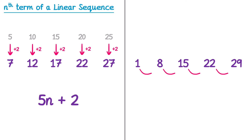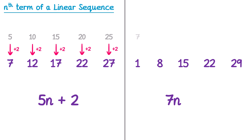For the next question, to get from one term to the next, we're always adding 7, so this is based on 7n. We write the 7 times table above the sequence. To get from 7 to 1, we subtract 6. This works from 14 to 8 and for all of the other terms as well. So this must be 7n subtract 6.